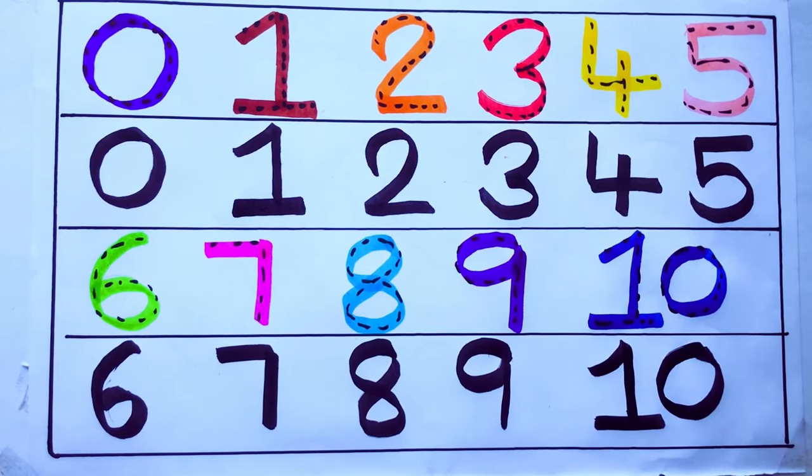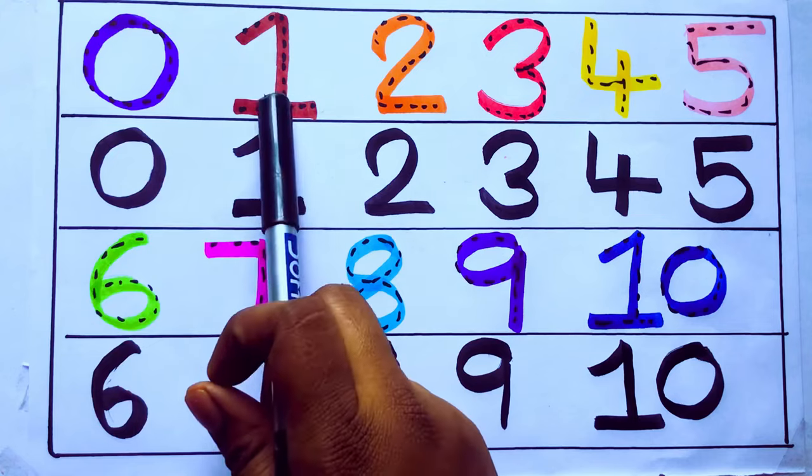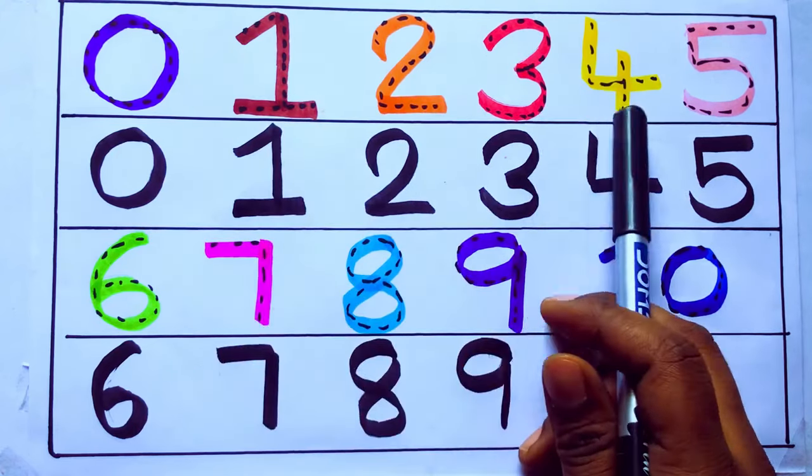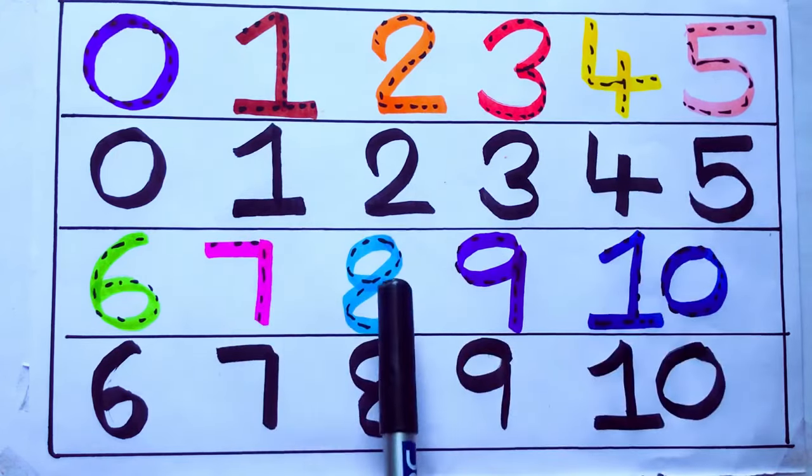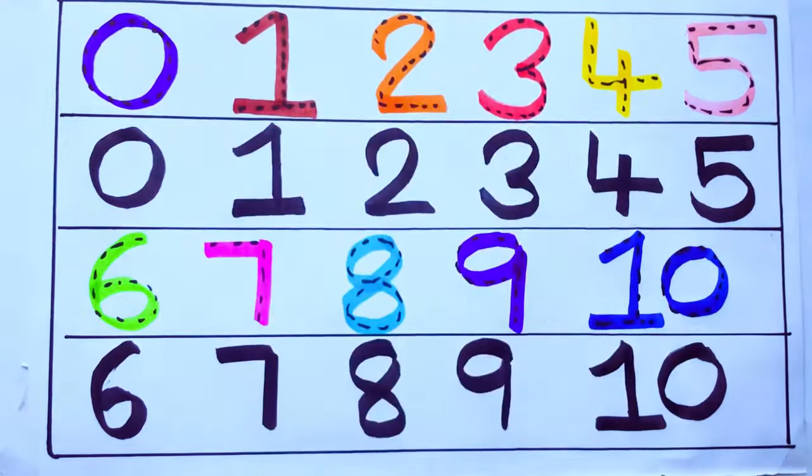Let's review learning numbers. 0, 1, 2, 3, 4, 5, 6, 7, 8, 9, 10. Okay, bye kids.